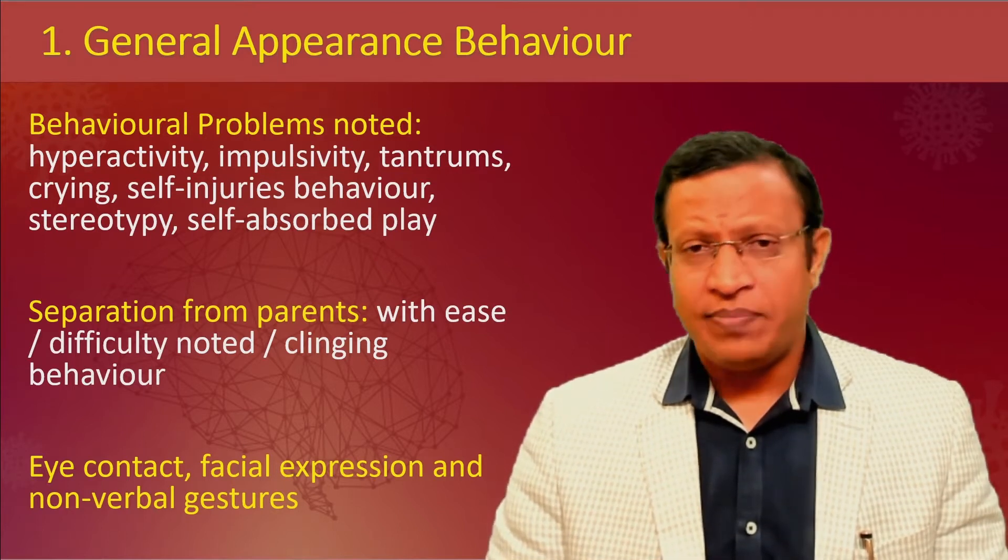For cognitive function, tailor questions to the child's age, cognitive ability, and developmental level. Assess consciousness — whether the child is alert, drowsy, or stuporous — and orientation to time, place, and person. Younger children may struggle with time orientation but can typically name family members and roughly identify place. For attention and concentration, observe whether the child can persist with a toy or task, or jumps quickly from one toy to another. In adolescents, digit forward and digit backward tests can be used.